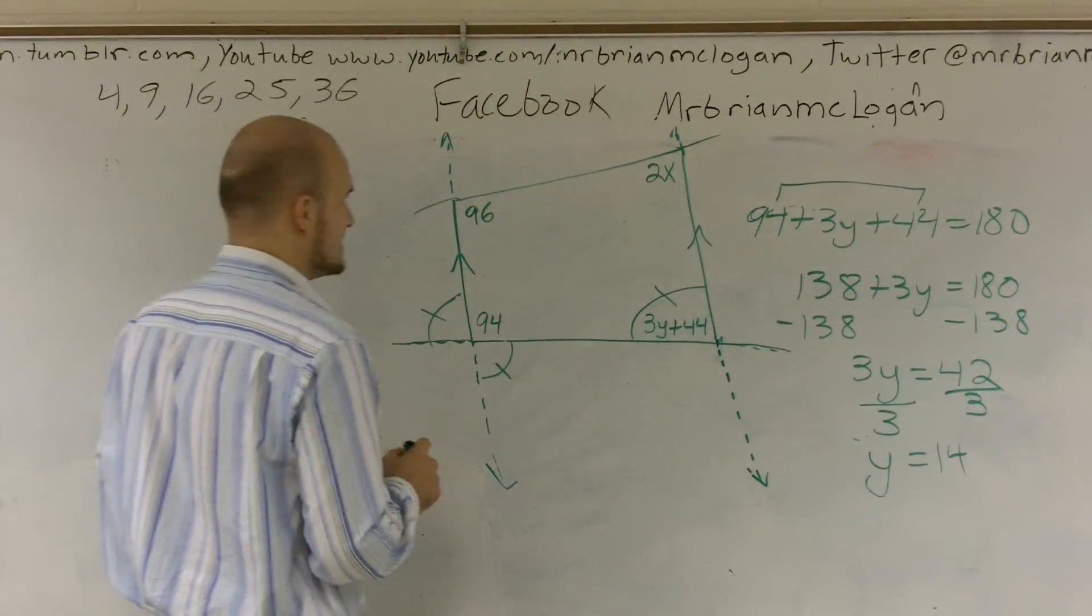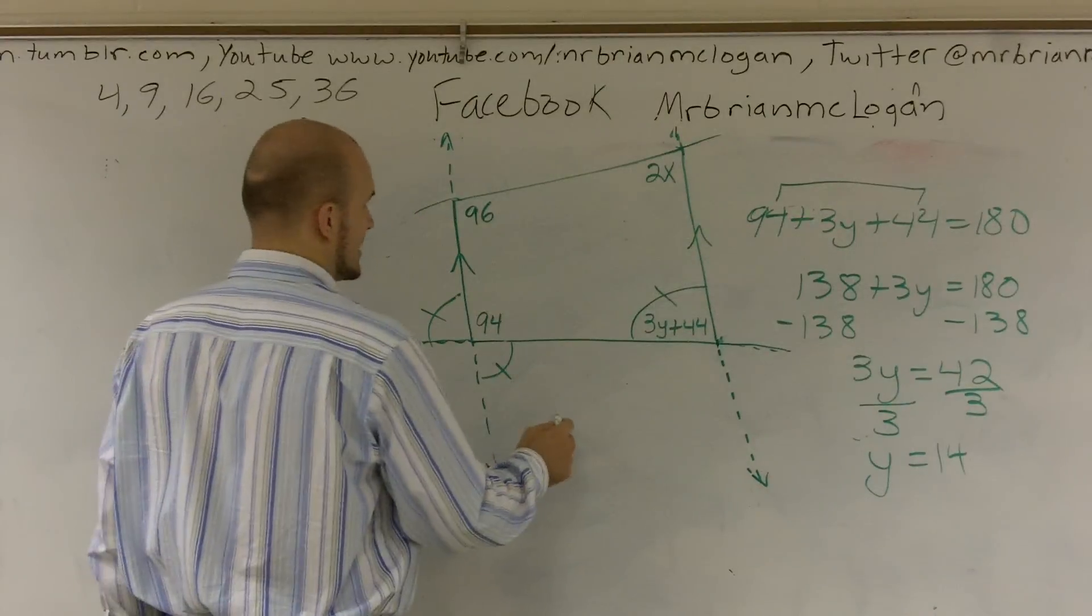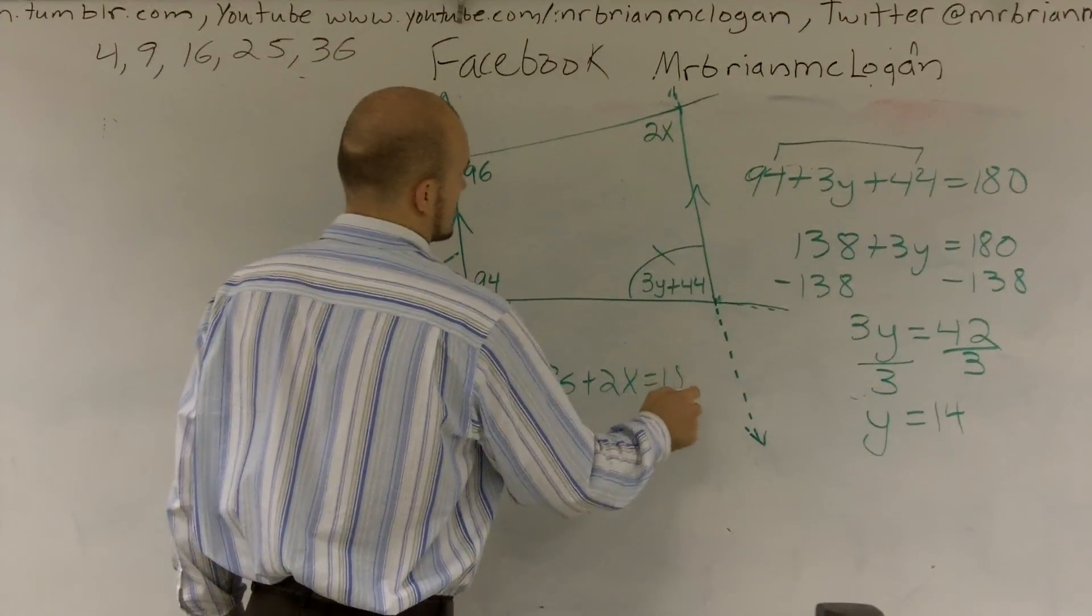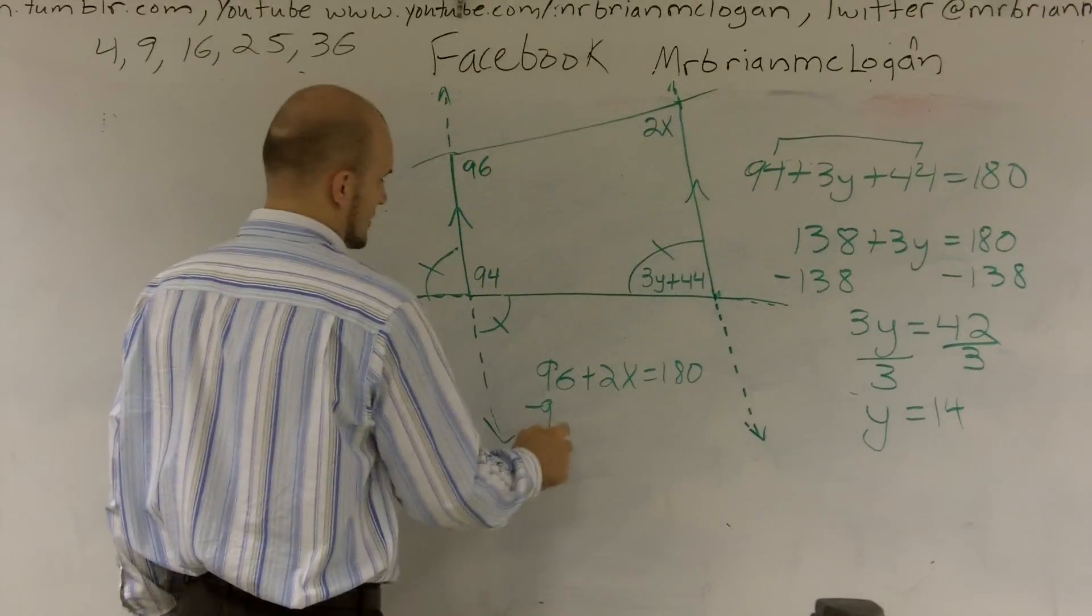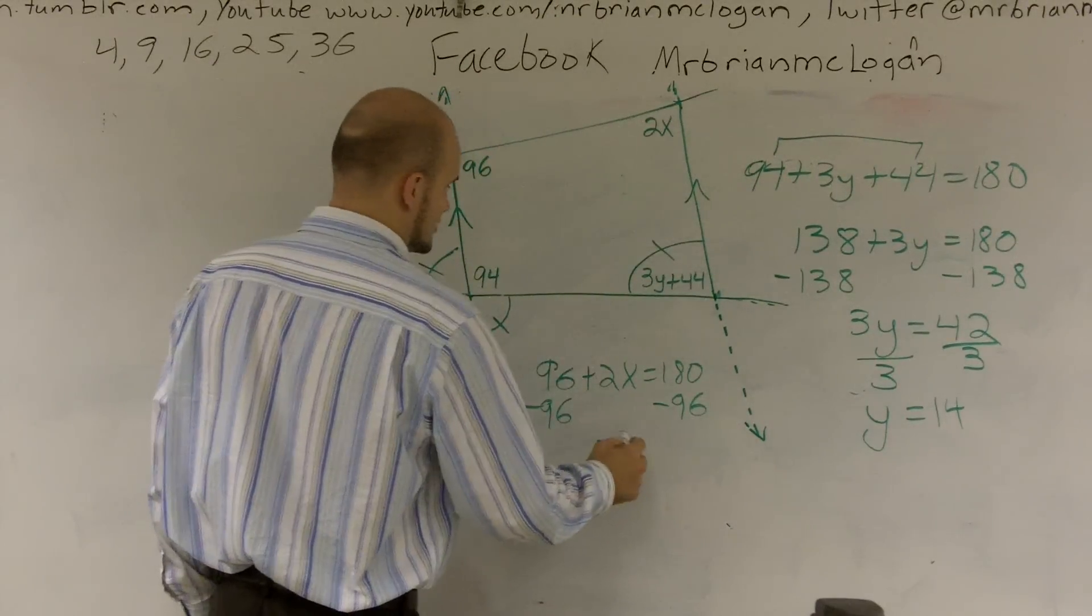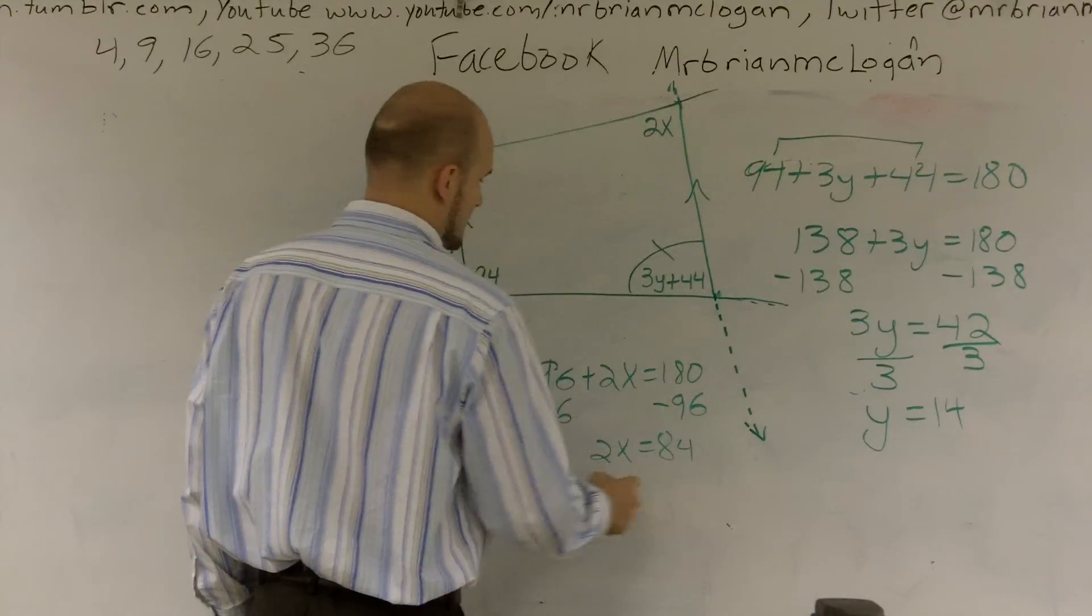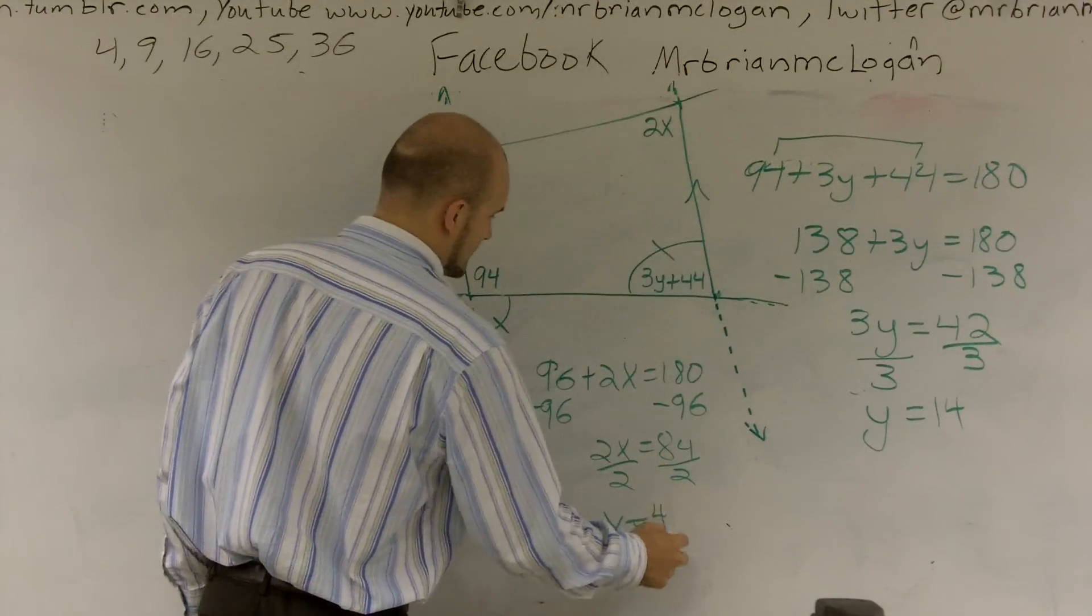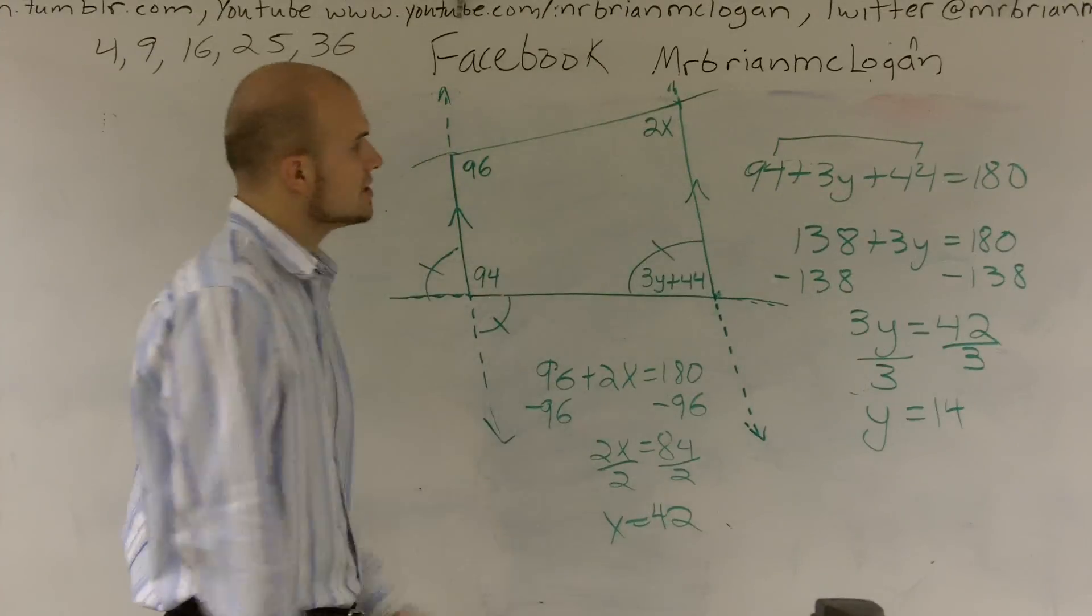For this problem we can set up the exact same situation. I can say 96 plus 2x equals 180. So I subtract 96, I get 2x equals 84. Divided by 2, x equals 42.